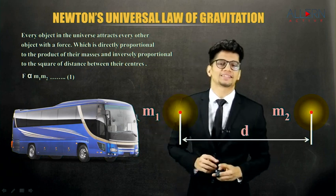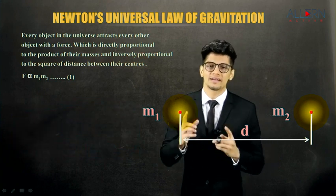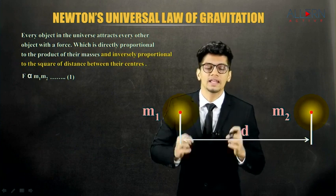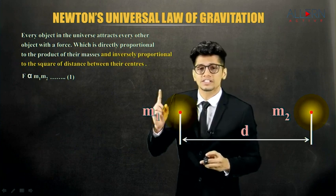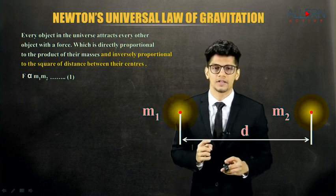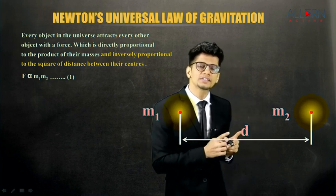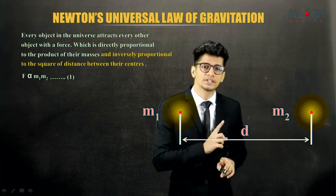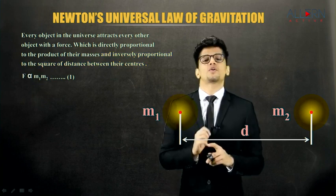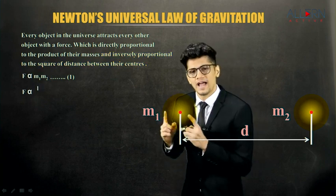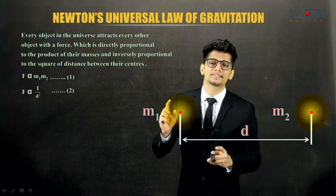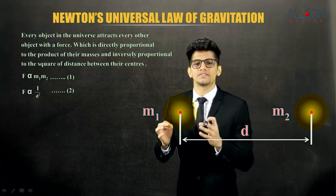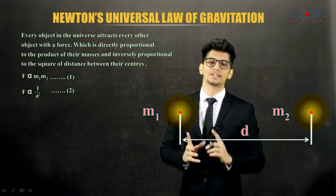Now for the second part: the force is inversely proportional to the square of the distance between the centers, where the distance is denoted by small letter d. So the force is not only inversely proportional to the distance, but to the square of the distance. We write: F alpha 1 upon d square, which is equation number 2 — meaning force is inversely proportional to the square of the distance between their centers.